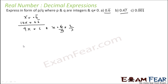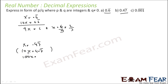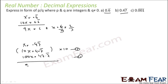The next is 0.47 bar. If x equals 0.4 and 7 bar, the first rule is to make sure the decimal point comes just before the repeating part, so 10x equals 4.7 bar. Since the repeating part is one unit, we multiply by 10 again: 100x equals 47.7 bar. Subtracting equation 1 from equation 2: 100x minus 10x is 90x, and 47.7 bar minus 4.7 bar is 43. So x equals 43 by 90.